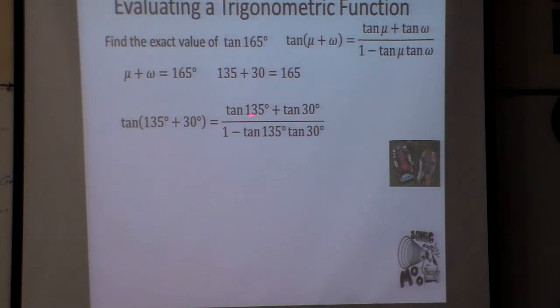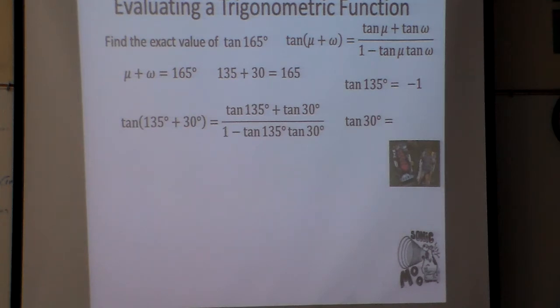I can go to my unit circle and find the tangent of 135, which happens to be negative 1, and the tangent of 30 happens to be the square root of 3 over 3 after you rationalize it. So now I'm going to go plug them in.